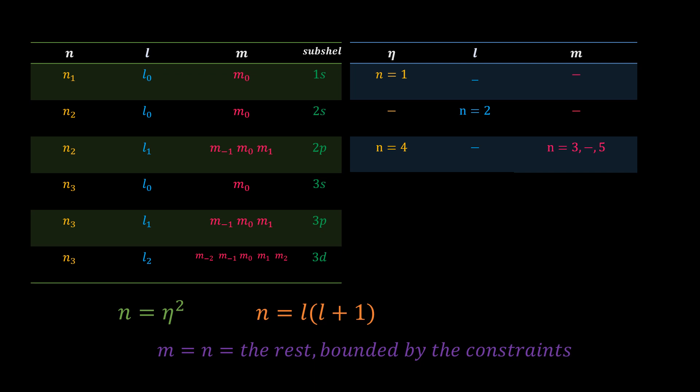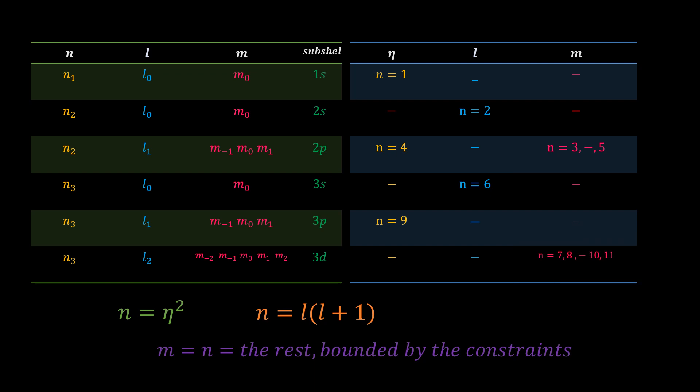For eta equal to 3, we have 9 under eta, 6 under l, and so on. These two tables are identical, but for the fact that I choose to not repeat numbers. If I did, then the tables will become exactly the same.